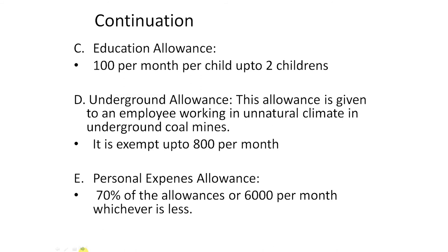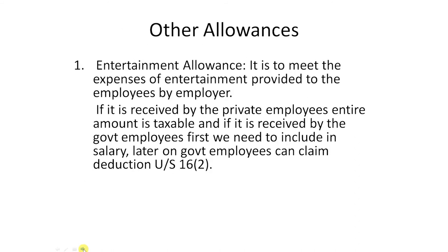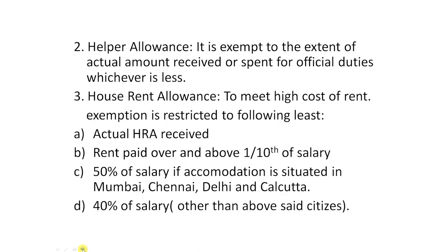Next one: other allowances. Under that, first one: entertainment allowance. It is to meet the expenses of entertainment provided to the employees by the employer. If it is received by private employees, the entire amount is taxable. If received by government employees, first we need to include it in salary, and later government employees can claim deduction under Section 16, Sub-section 2. Next one: helper allowance. Helper allowances are those allowances provided to the employees in order to meet expenses with respect to a helper. It is exempt to the extent of the actual amount received or spent for official duties, whichever is less.